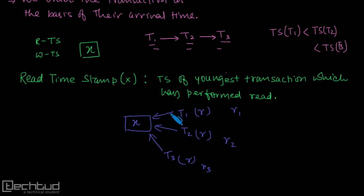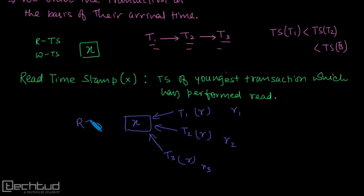We know that the youngest transaction will have the largest timestamp value. That largest timestamp value will be the read timestamp of X. This is what we mean by the read timestamp.